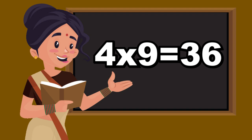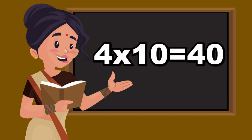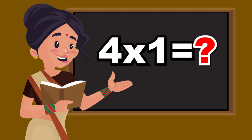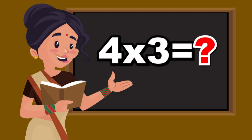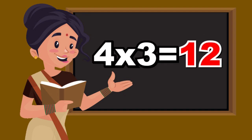Four tens are forty. Four ones are four. Four twos are eight. Four threes are twelve.